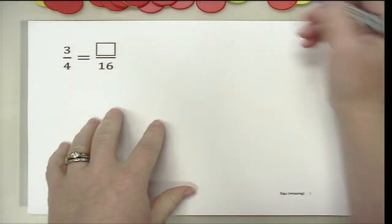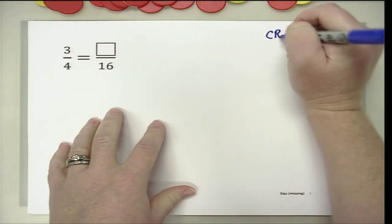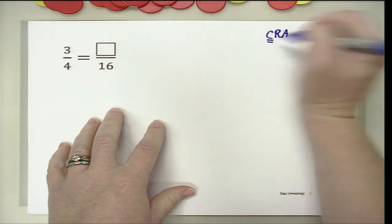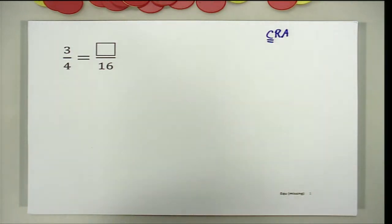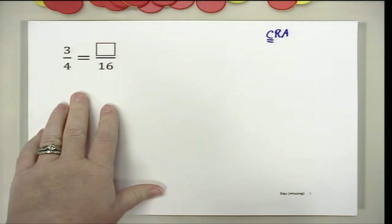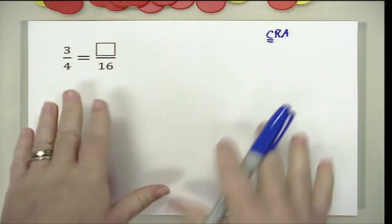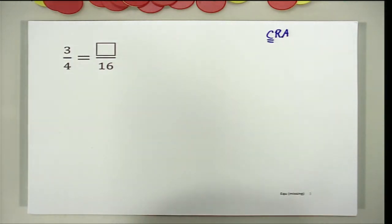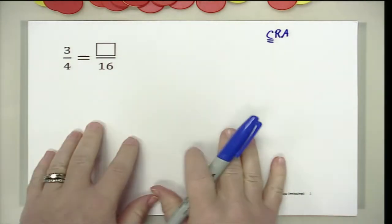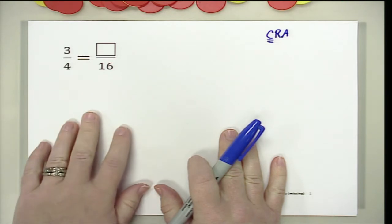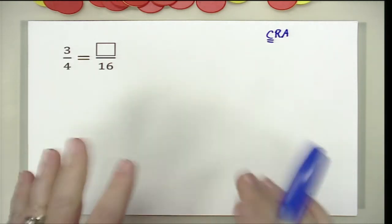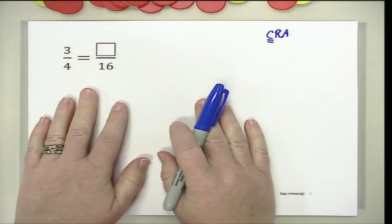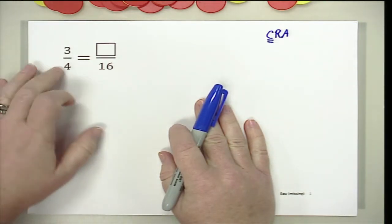We are working with the CRA progression and really just focusing on the C today with fractions. Jared also has some videos on multiplication and division of fractions, so make sure you check those out. This video is just going to be focusing on those beginning concepts of fractions, comparing, and addition and subtraction. The first thing we want to make sure students understand is what the 3 and the 4 represent.